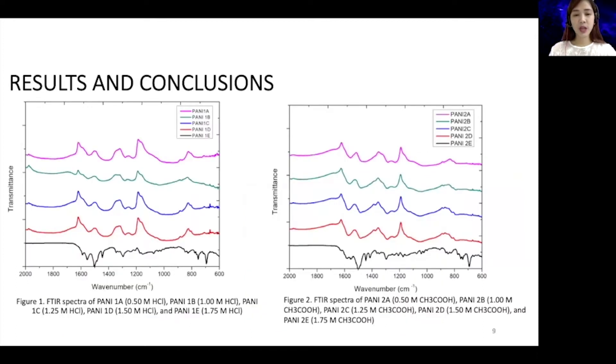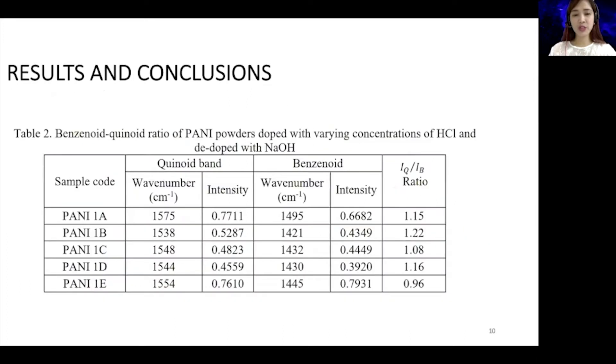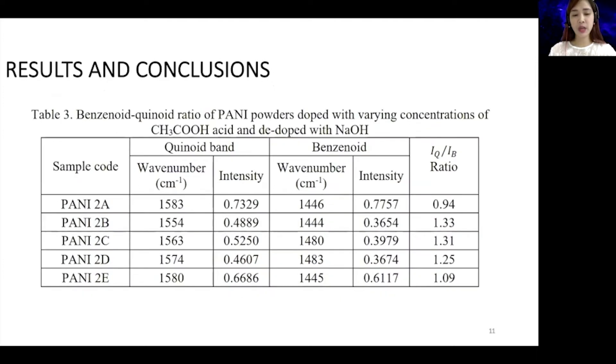Figure 1 and 2 shows the characteristic peaks of PANI, doped with HCl and acetic acid respectively, where it can be observed that there is a slight shift to the left of the characteristic peaks of all PANI samples. Table 2 shows the degrees of oxidation of the samples. From this, it can be observed that PANI1E has the lowest degree of oxidation, while PANI1A has the highest. This indicates that the degree of oxidation decreases with increasing HCl concentration. In Table 3, PANI2A has the lowest degree of oxidation, while PANI2B has the highest. The rest of the PANI samples show decreasing degree of oxidation.